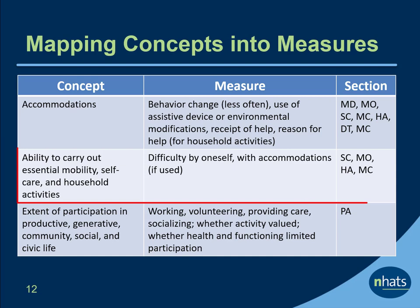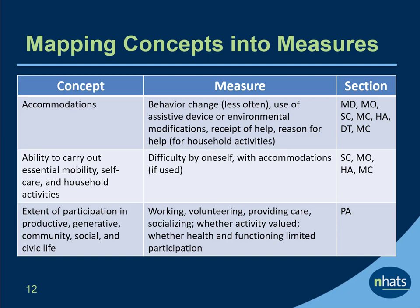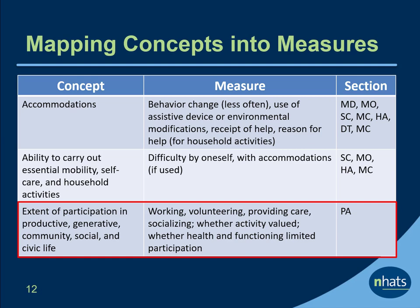For ability to carry out essential activities, measures assess difficulty doing the activity by oneself with accommodations if used. Activities include mobility, self-care, and household activities, as well as medical care activities. Participation measures include whether the individual participated in the last month in working, volunteering, providing care or social activities, the extent to which the activity is valued, and whether health or functioning limited participation.